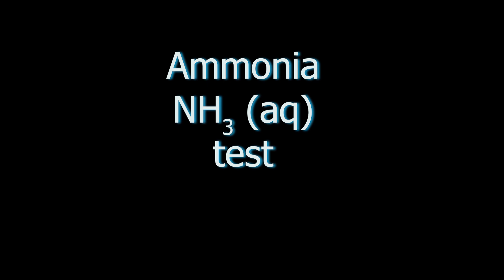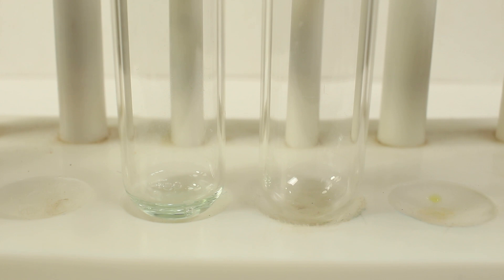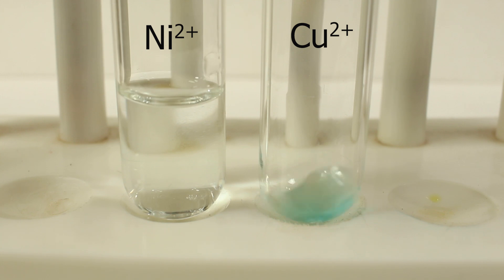Ammonia is an alkaline gas forming alkaline water solution, and also it can form complexes with transition metals. So let's see which complexes it forms with copper II ions.